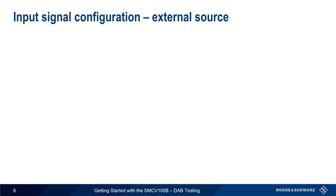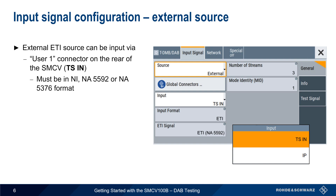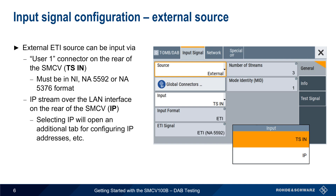Let's start by looking at how to configure an external source. There are two methods for connecting external sources. The first is connecting to the User 1 BNC connector on the rear panel of the SMCV, and this signal must be in one of the formats shown. Alternatively, the ETI data can be streamed into the SMCV via its LAN interface. In this case, an additional tab will appear for configuring IP addresses, ports, etc. The Input Signal dialog also contains information about the number of streams, transmission mode, etc. in the externally input signal.